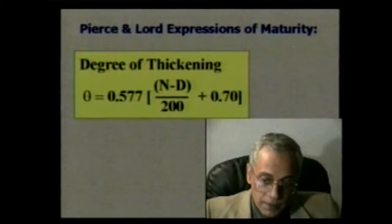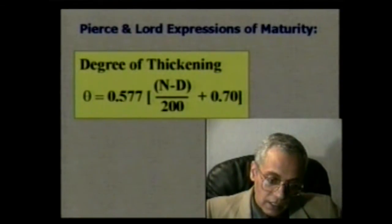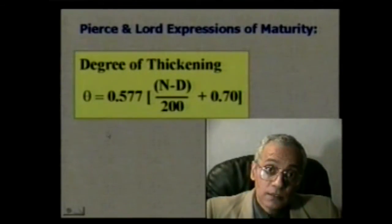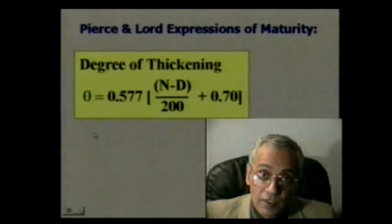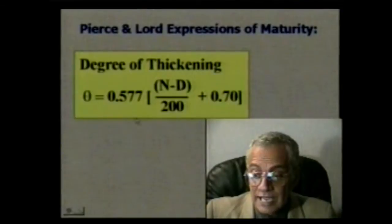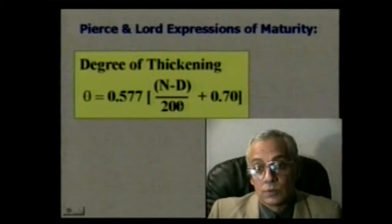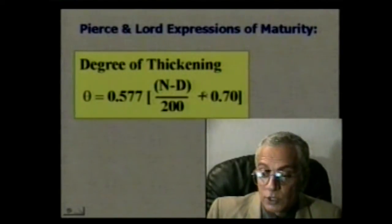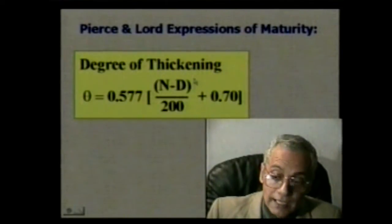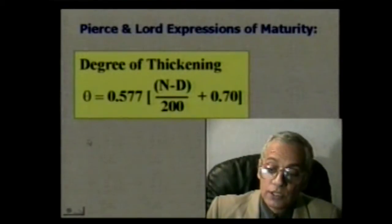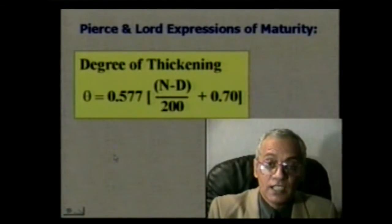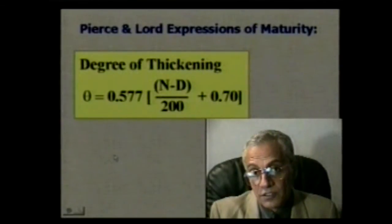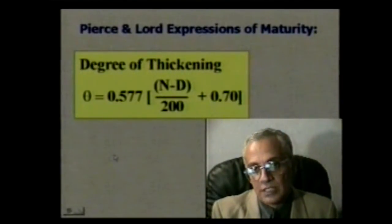There is a relationship established by Peirce and Lord between the circularity or degree of wall thickening and the maturity count — a very simple linear relationship. So if you can count the number of mature and immature fibers and get a good maturity count, you can estimate the degree of secondary wall thickening or the circularity of the fiber.